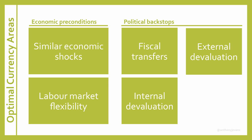But the only real alternative is outright default. A default is one option, and interestingly, it's been used in several other cases. In 2008, California had a budget crisis in the United States, and interestingly, the possibility of a Californian default did not raise any questions at all about whether California should leave the dollar area. Indeed, possibly, the threat of default is one reason why a currency area can survive in the first place.